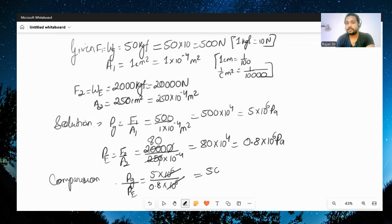We can understand this is 50 by 8, which is 6.25 times more. So that means the pressure exerted by the girl is 6.25 times more than the elephant.